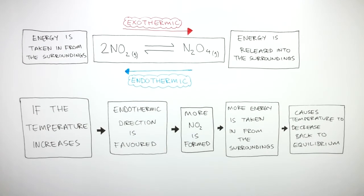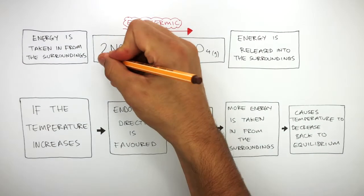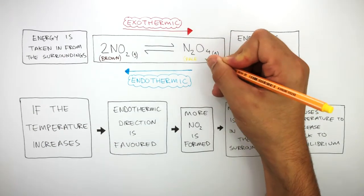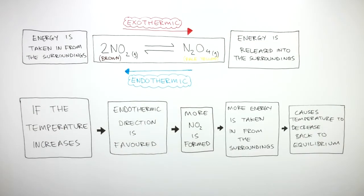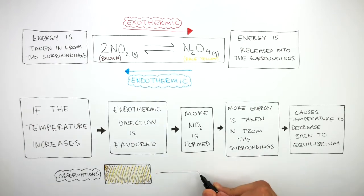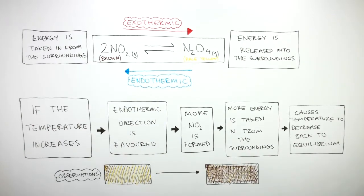NO2 is brown and N2O4 is pale yellow. So when we look at this reacting mixture, we can see from our observations that because more NO2 is formed, the reacting mixture becomes more brown.